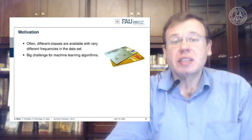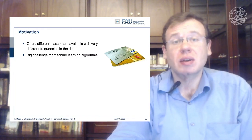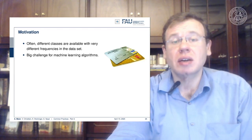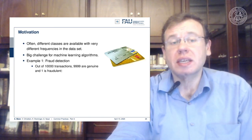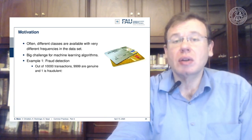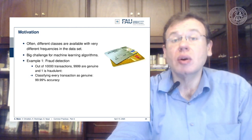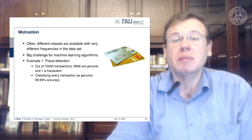Machines don't really have common sense. A very typical problem is that one class — in particular the very interesting one — is not very frequent. This is a challenge for all machine learning algorithms. Take the example of fraud detection: out of 10,000 transactions, 9,999 are genuine and only one is fraudulent. So if you classify everything as genuine — because it's the lazy approach — you still get 99.99% accuracy.